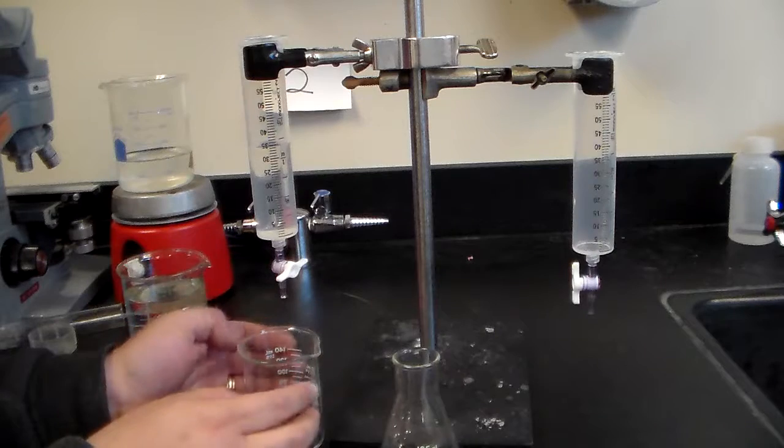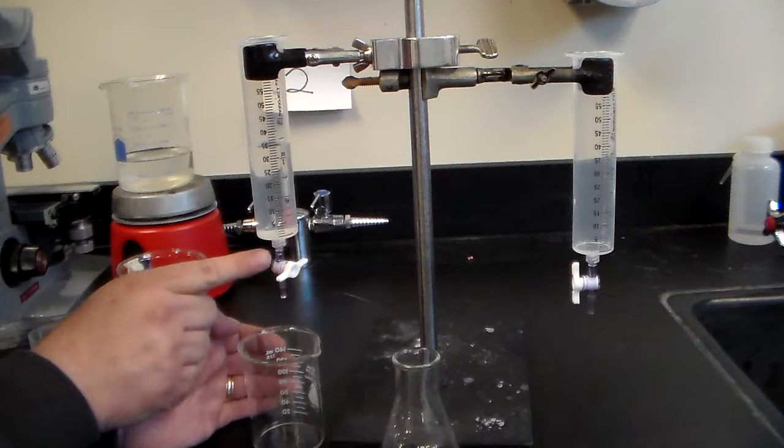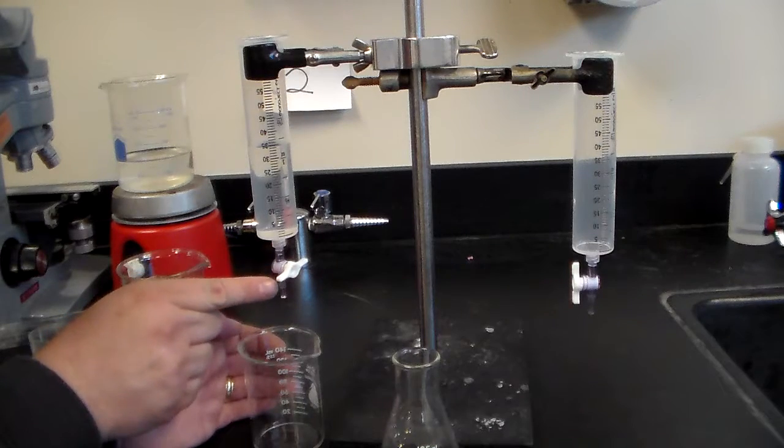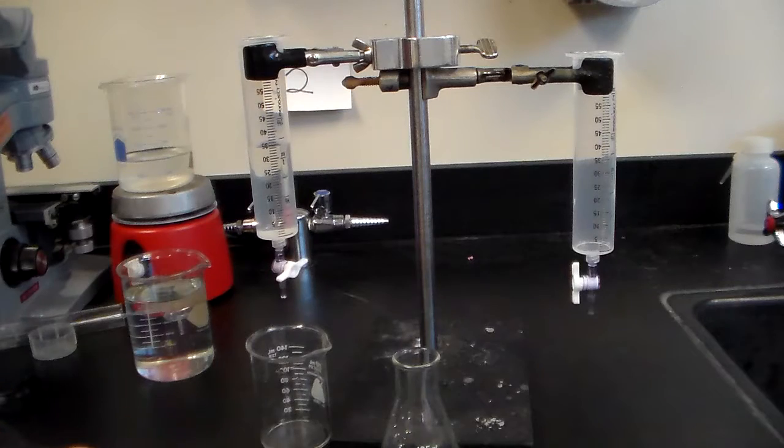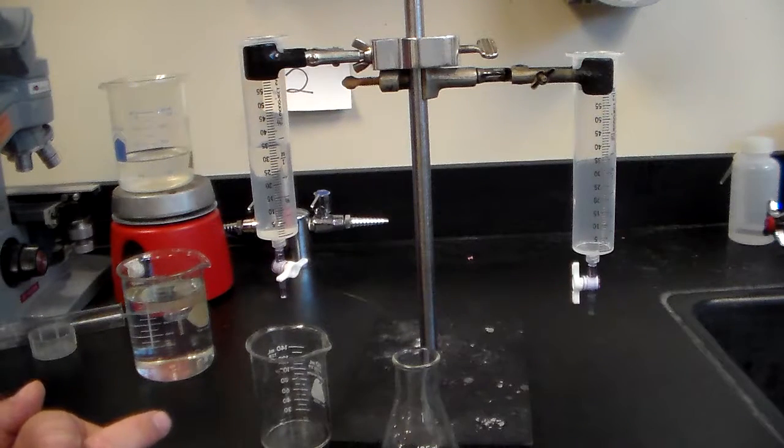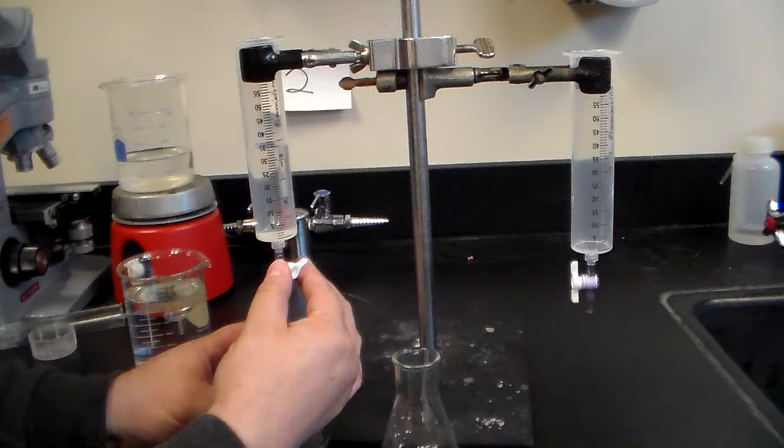How do we operate the burette? If you take a closer look, you're going to see air bubbles in the spout. We need to clear those air bubbles out because that will give us a bad reading in terms of volume.